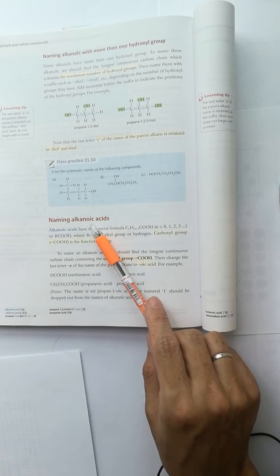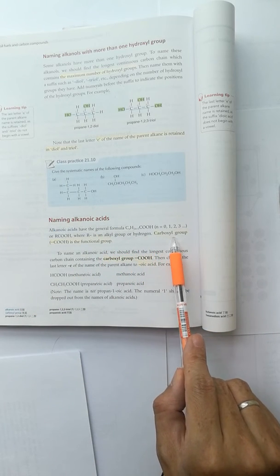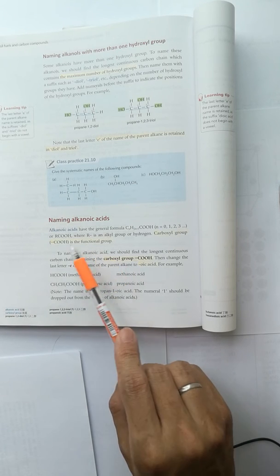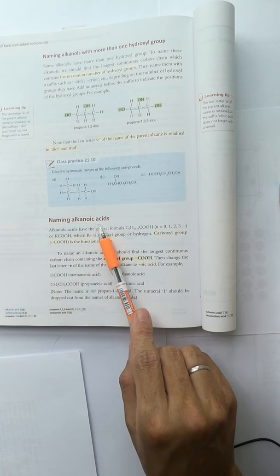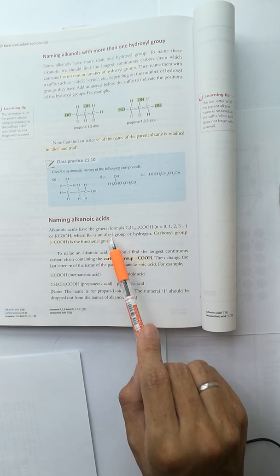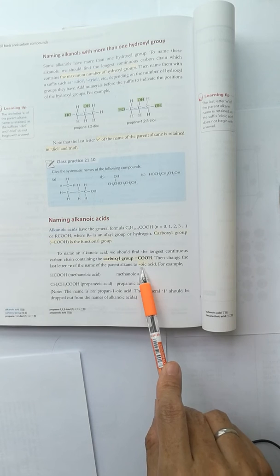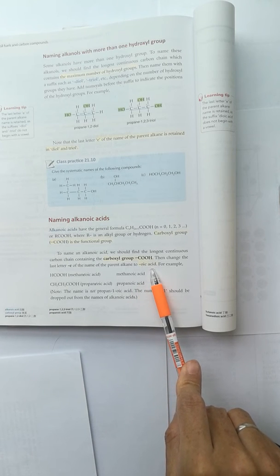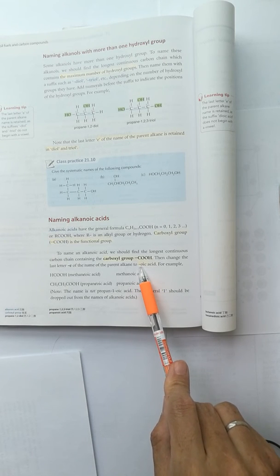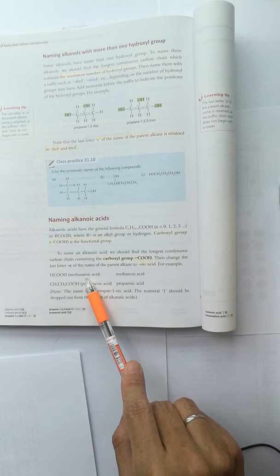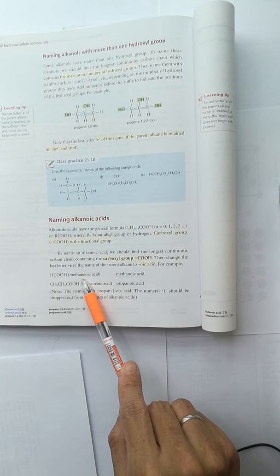Alkanoic acid has the functional group carboxyl group, COOH. And the name for the alkanoic acid, we use the ending oic acid. O is a letter with a vowel sound, so in front of O, E is omitted.